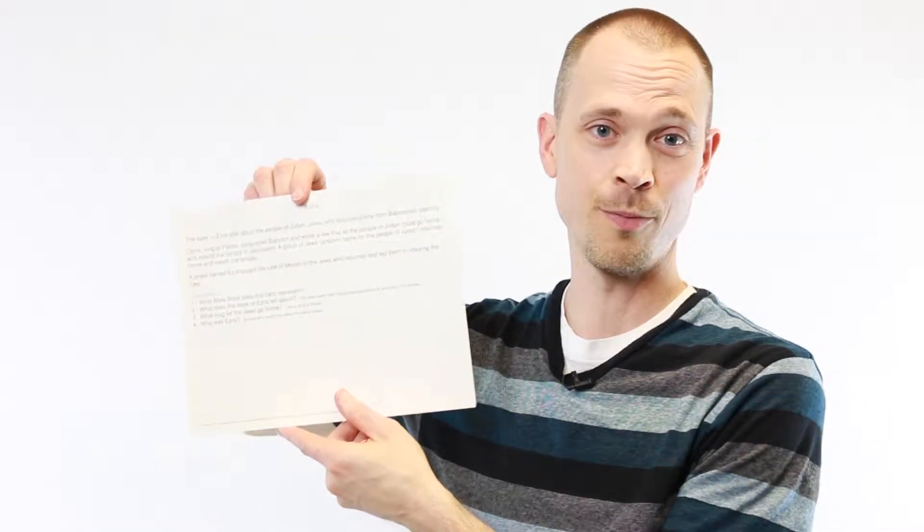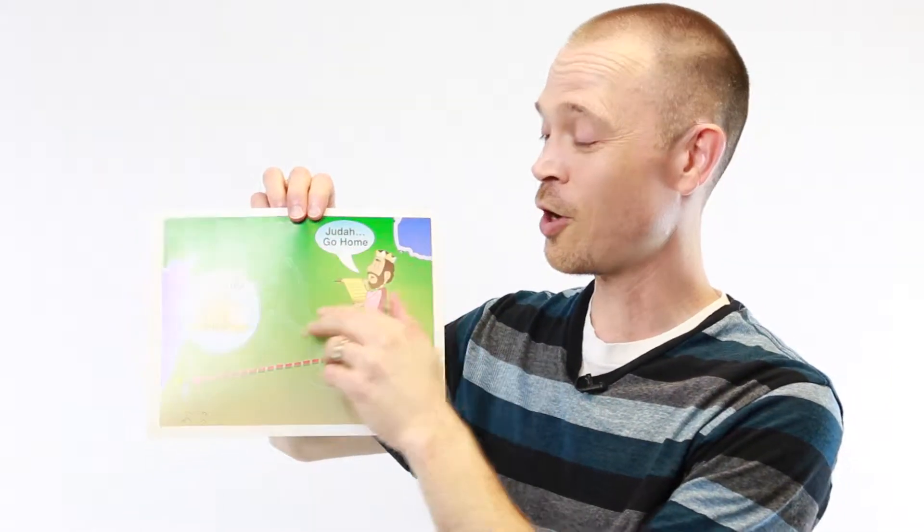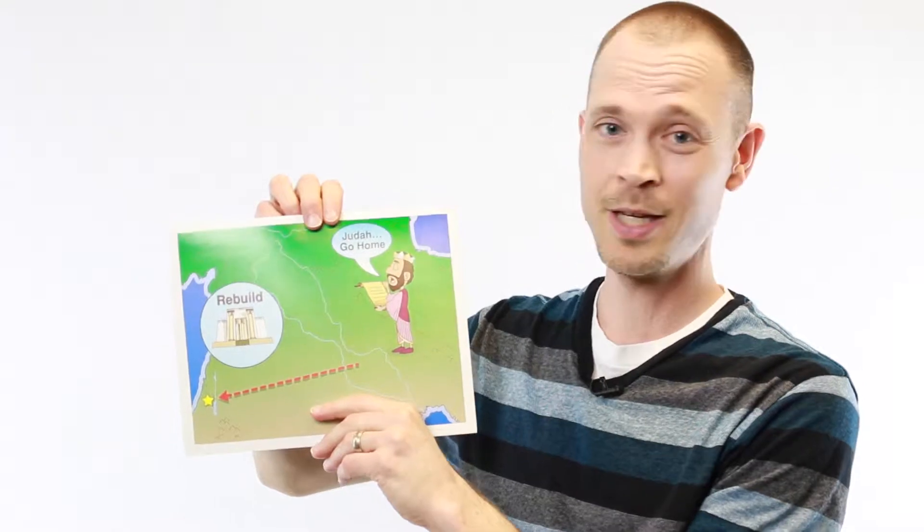For example, this card represents the book of Ezra. On the back is a brief summary of the book that basically tells us that in the book of Ezra, King Cyrus of Persia let the Jews go home from Babylonian captivity and rebuild the temple. Some of them did and a priest named Ezra taught them the law of Moses.